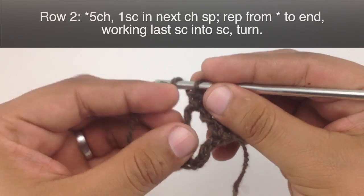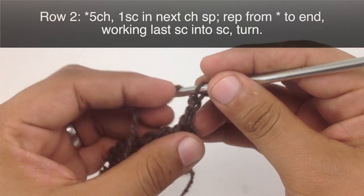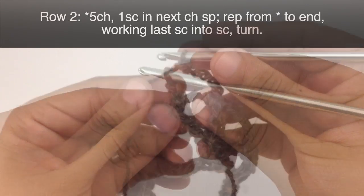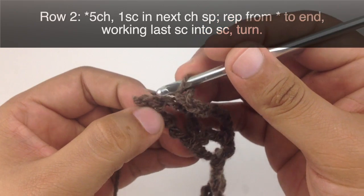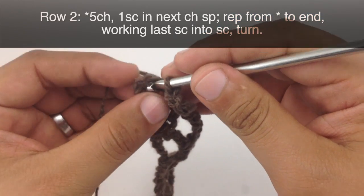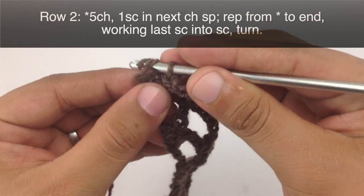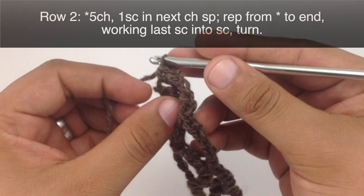And we are going to repeat this sequence until we reach the end of the row. Then when we reach the end of our row we are going to do a single crochet. Instead of doing it into the middle of the chain space we are going to go right into the turn chain from the row before, and then we will turn our work.